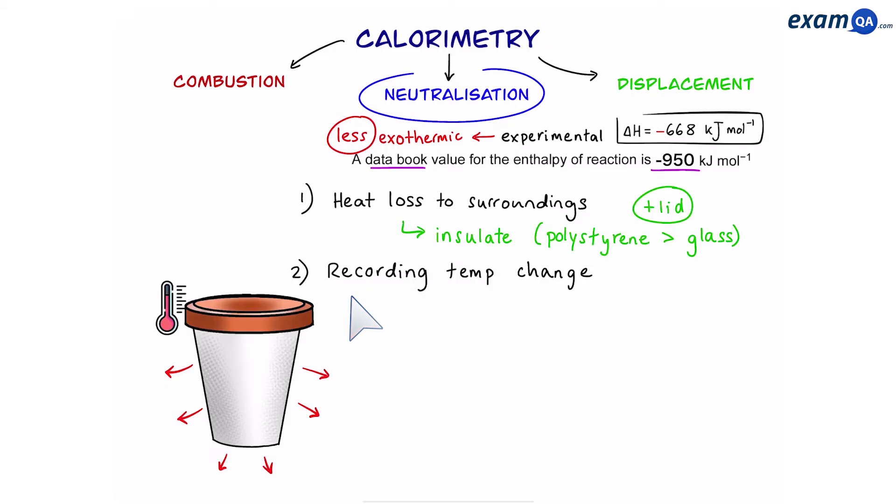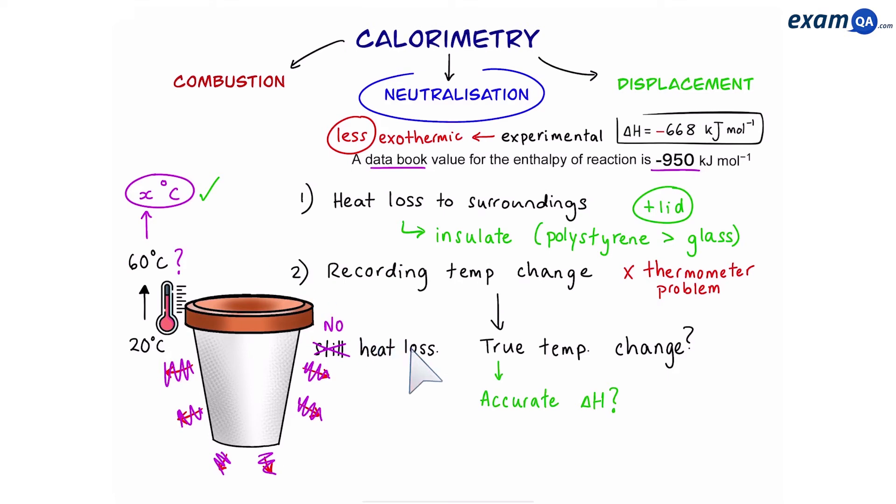The second reason our value is less exothermic is because of problems in recording temperature change. The reaction on the thermometer said 20 to 60 which is fine. However despite our best attempt to insulate it there's always going to be heat loss. So if there was some magical way of preventing complete heat loss, so fully insulating the reaction, do you think the same reaction would go from 20 to 60 or perhaps would it go to an even higher temperature? If you think it will go to a higher temperature when we prevent heat loss then you're correct.